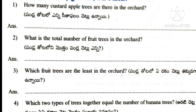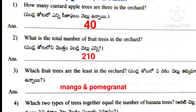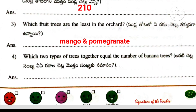Based on the table here are some questions. First question: How many custard apple trees are there in the orchard? Answer: 40 custard apple trees are there in the orchard. Question number 2: What is the total number of fruit trees in the orchard? Total equals 210. Third question: Which fruit trees are the least in the orchard? Answer: mango and pomegranate. Fourth question: Which two types of trees are the least? If you add mango and pomegranate we get 60, so the answer is mango and pomegranate.